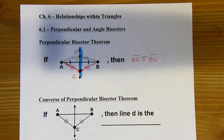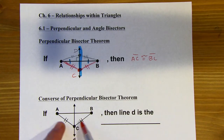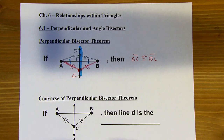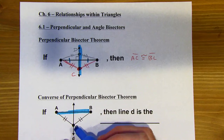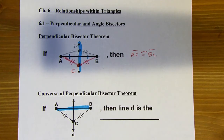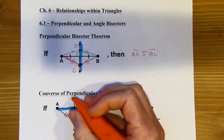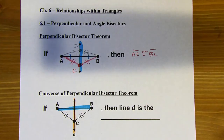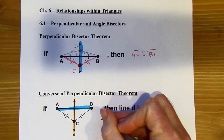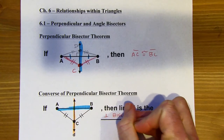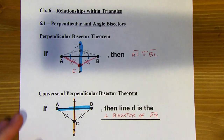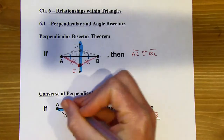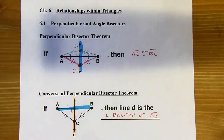The converse says that when you have a point that's equidistant from the ends of a segment — here I've got segment AB and point C is equidistant from those endpoints — then that means point C is going to be on the perpendicular bisector. So that means this line has to be the perpendicular bisector. I can use this theorem to say there's a right angle there, and also these two segments are congruent because it cuts it in half.